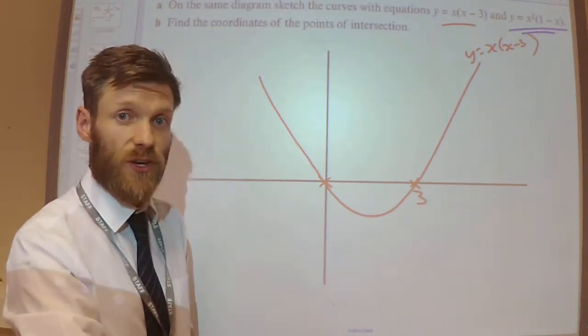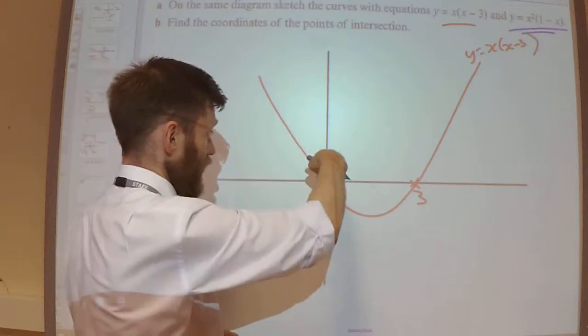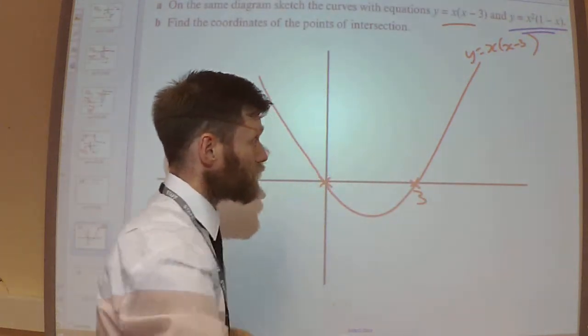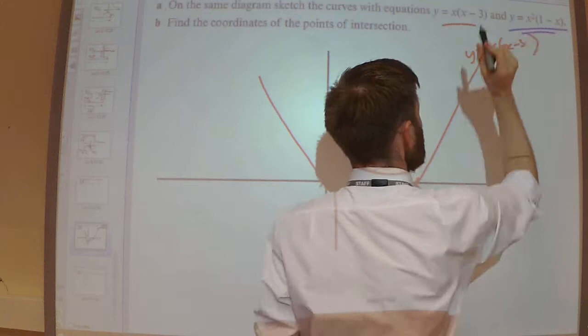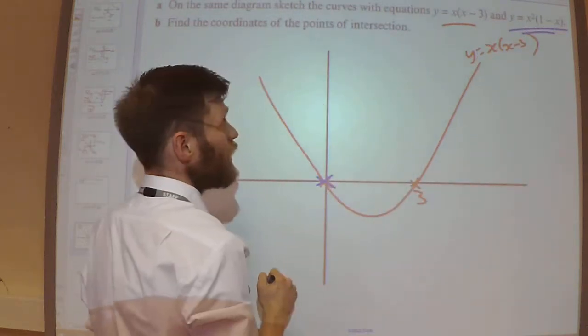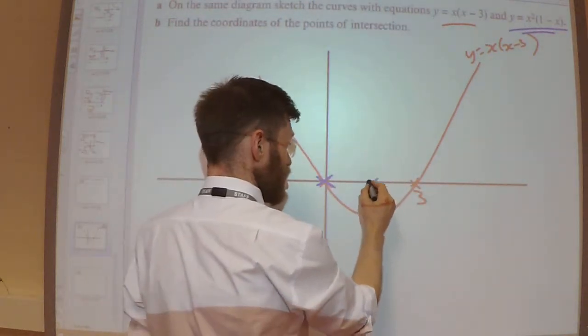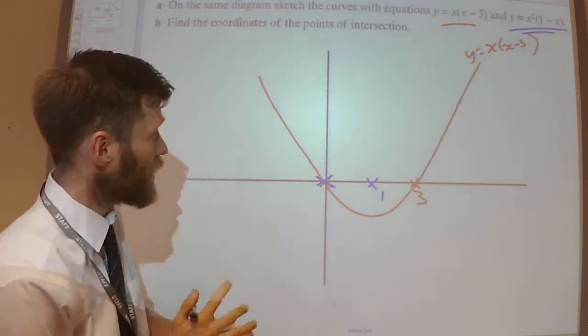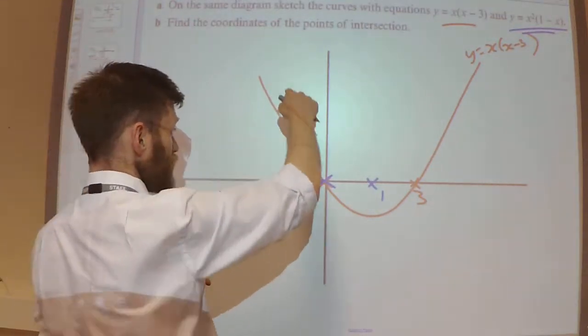Because it's a -x³, I know it's going to be going down, then up, then down. Now I know it's got a repeated root at 0, and I know it's also going to go through at 1.